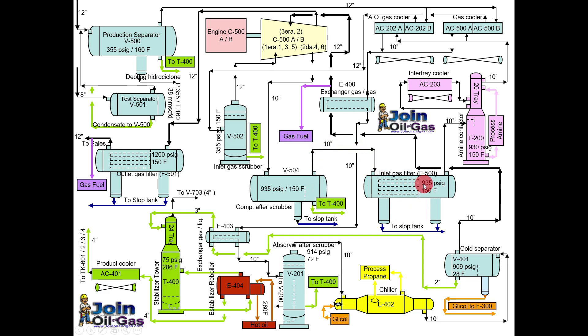The gas then flows to the inlet gas filter. We need a filter here because downstream there is an absorption process. We have to remove all the dirt or any solid particles from the gas, because if we don't separate those particles, they may cause a foaming problem in the absorber or amine contactor.